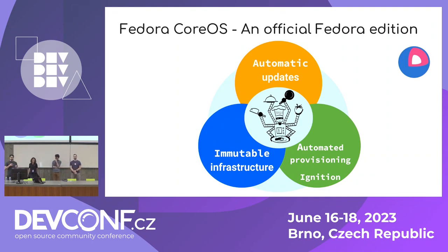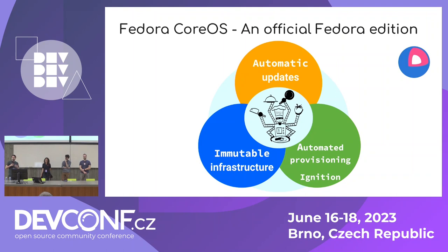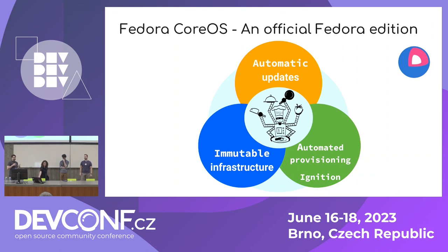The benefit underneath Fedora CoreOS is that you are using an immutable infrastructure. You are doing provisioning via Ignition. You write a config for what you want to have on your system. From the first boot, you get a system provisioned and configured as you like — with your containers and your configuration. And that's what we've been using in OKD.